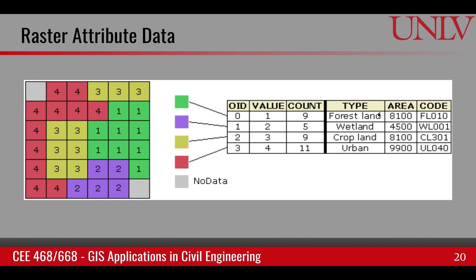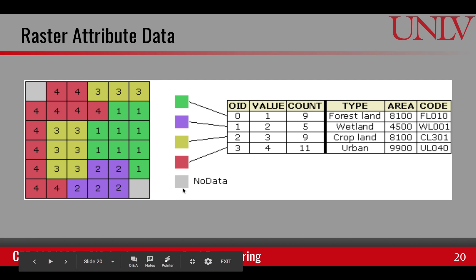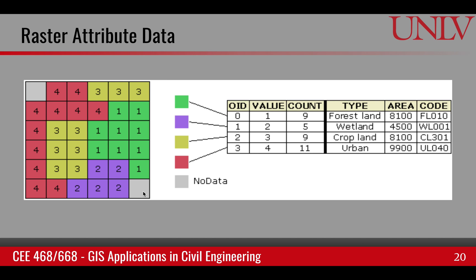Further description is provided by additional attributes. In this example, class 1 is forest land, class 2 is wetland, class 3 is croplands, and class 4 is urban areas. There are also gray cells indicating no data. No data usually has its own identifier — it could be -999 or some other arbitrary value — meaning that for those cells in the matrix, no data is available. There is no row for no data in the attribute table.